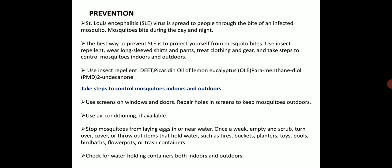Other preventive measures include use of screens on windows and doors, use of air conditioning if available, and stopping mosquitoes from laying eggs in or near water. Empty all tires, buckets, planters, toys and pools which contain water. Check for water-holding containers both indoors and outdoors — this is how we can control the insect vector, that is the mosquito, in disease transmission.